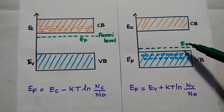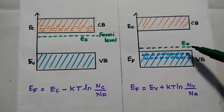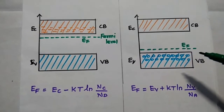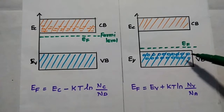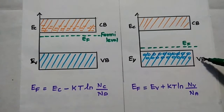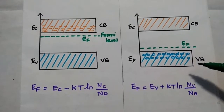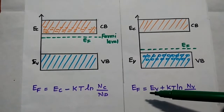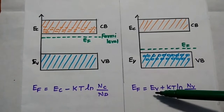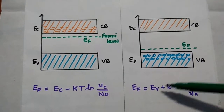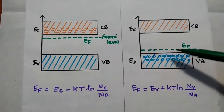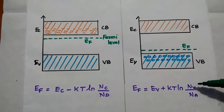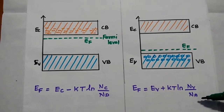For P-type, the Fermi level is shifting towards the top of the valence band due to the large number of holes. This can be given as: Fermi level of P-type is equal to EV, that is the energy of the valence band, plus KT log of Na by Nv.